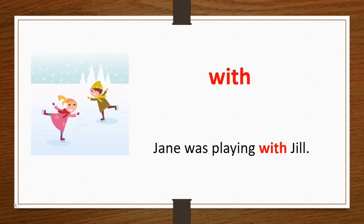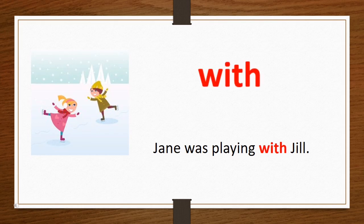Let us read the first word from list one, and the word is 'with.' The meaning of 'with' is: it is used to say that people or things are in a place together or are doing something together. Now let's use this word in a sentence: Jen was playing with Jill.